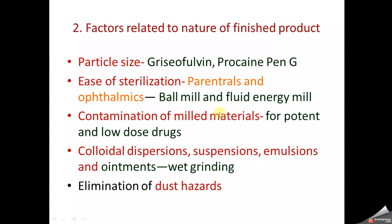So all these factors relate to what we want as the end product: for griseofulvin and procaine penicillin G we need very fine particle size; for sterile products we need ball mill and fluid energy mill; for very potent drugs we must avoid contamination of mill material; and for colloidal dispersions, suspensions, emulsions, or ointments, wet grinding is appropriate, which also eliminates dust hazards.